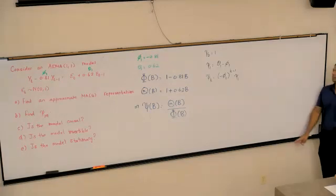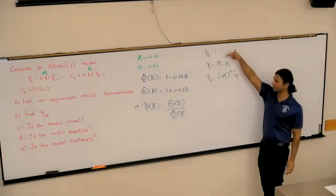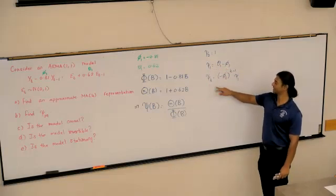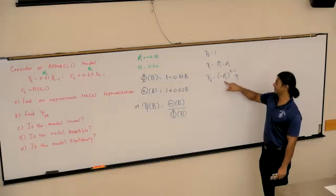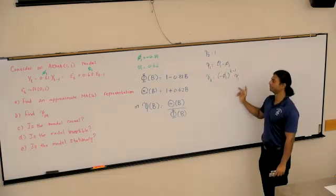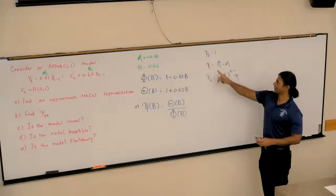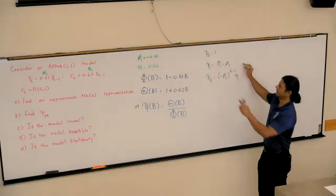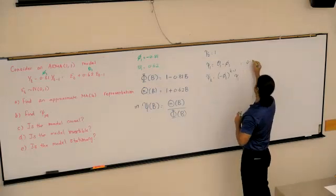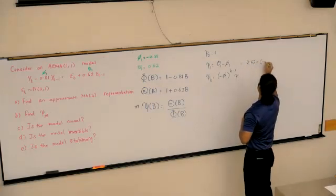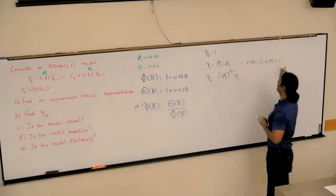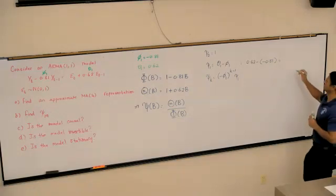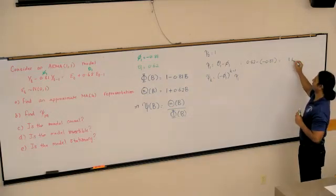We have psi0 equal to 1, psi1 equals theta1 minus phi1, and psi k equals minus phi1 raised to k minus 1 times psi1. So we can easily find psi1. Psi1 is 0.62 minus negative 0.81, which would give us 1.43.